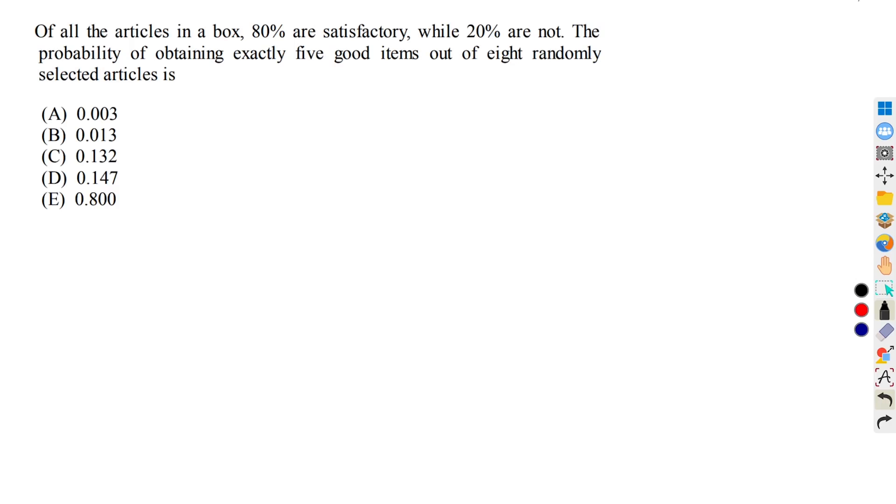Of all the articles in a box, 80 percent are satisfactory while 20 percent are not. The probability of obtaining exactly 5 good items out of 8 randomly selected articles is? We have given a box of which 80 percent are satisfactory and 20 percent are unsatisfactory. Now we have to compute the probability of obtaining exactly 5 good items out of 8 randomly chosen articles. This is the problem of binomial probability.